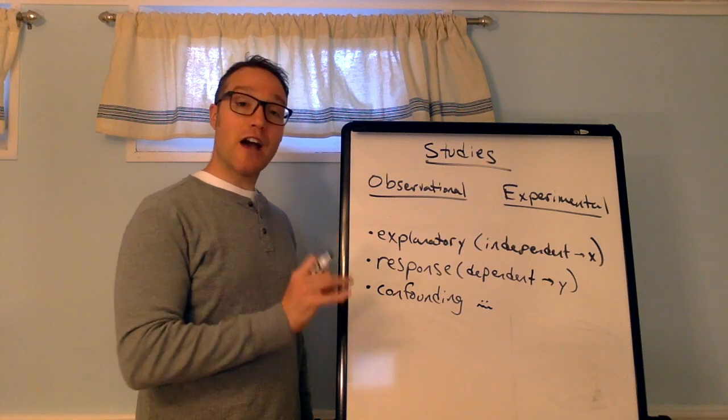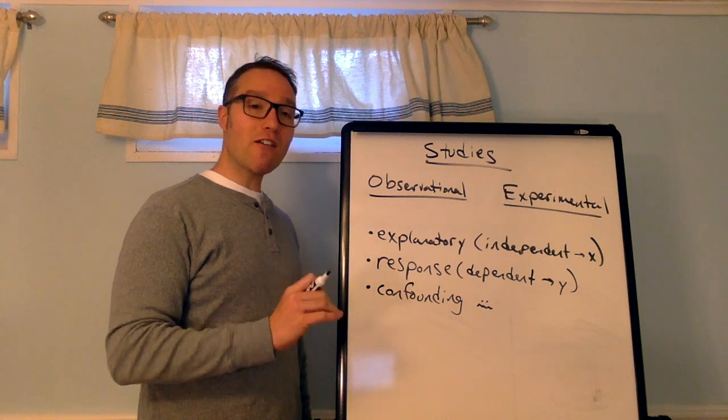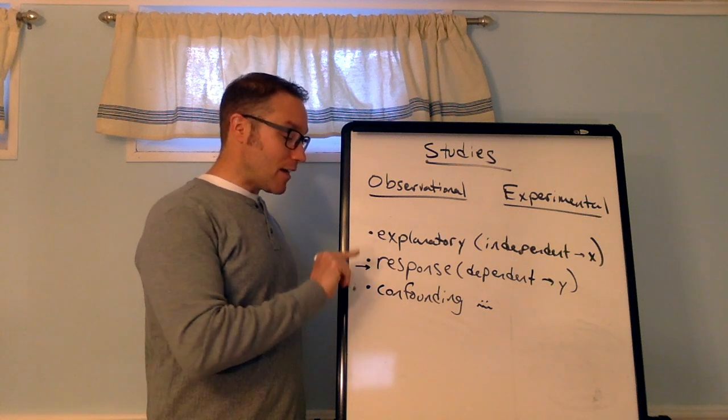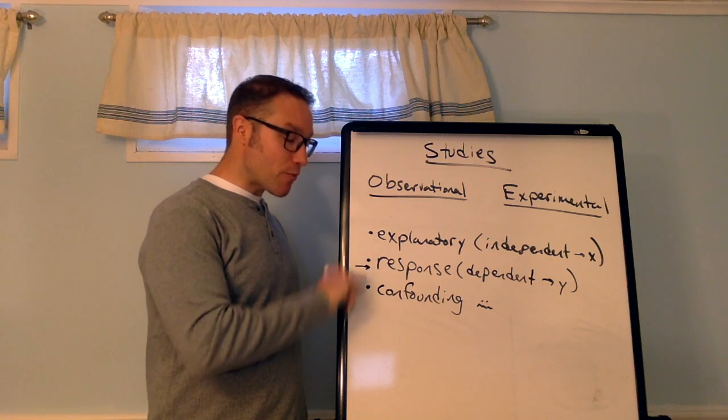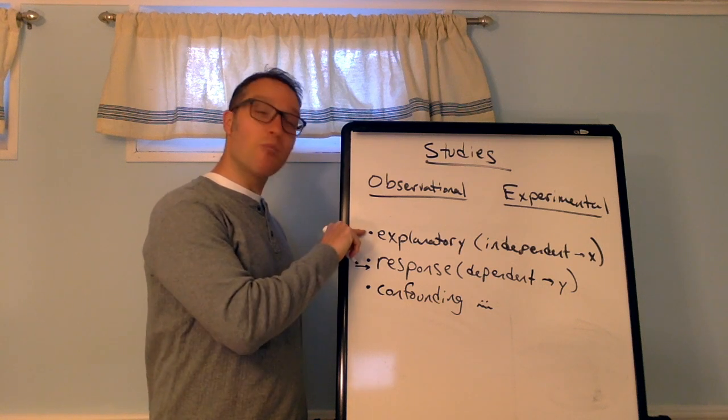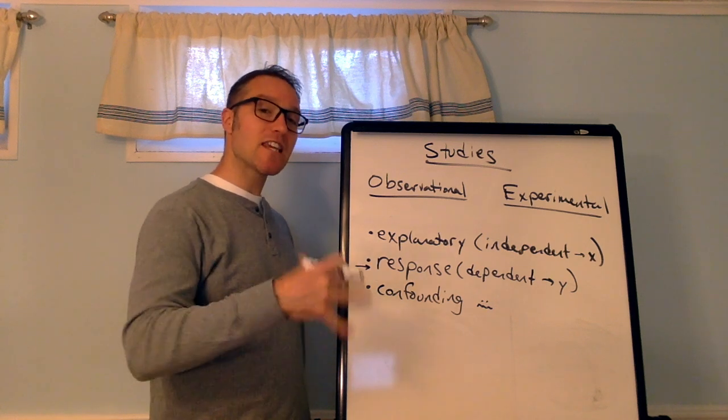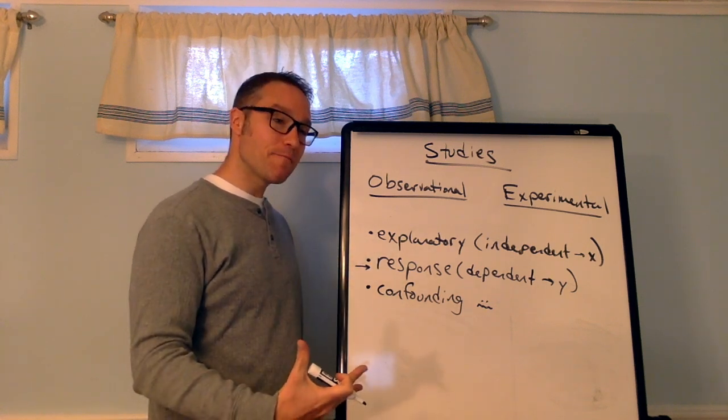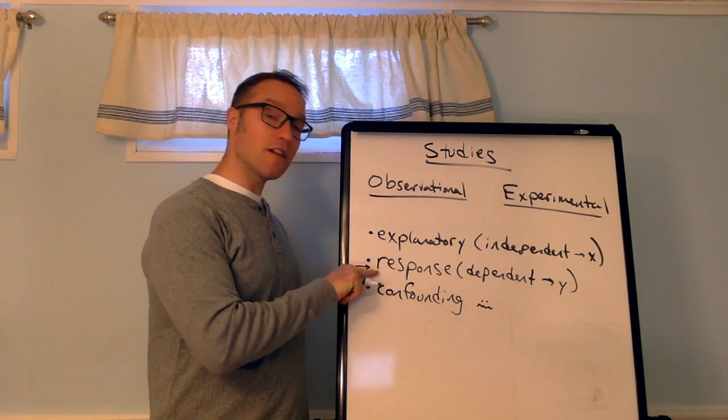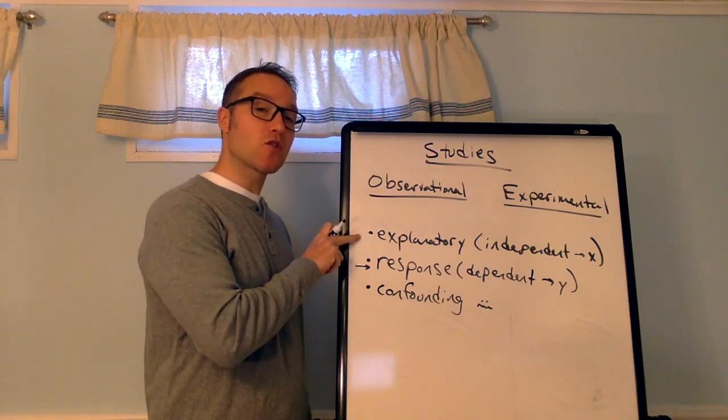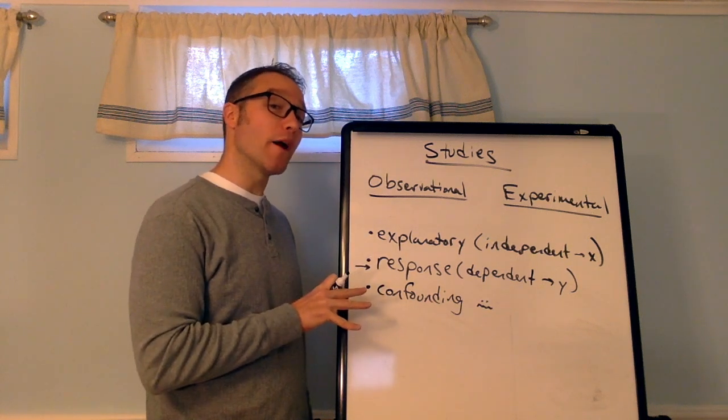A confounding variable is a variable that produces a response, and we're unable to separate its effects from the explanatory variable. So it's a variable that gets into our study that we didn't plan for. And once we see an effect, we can't really separate its effects from the explanatory variable and tell what's causing what.